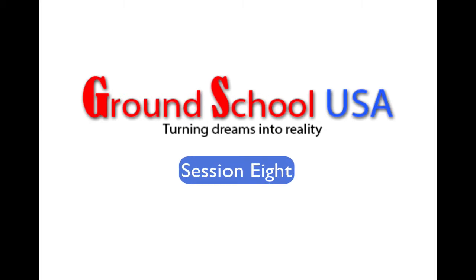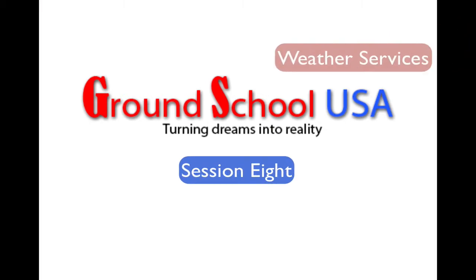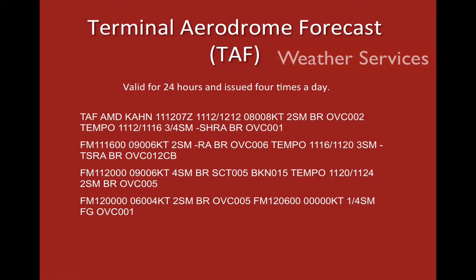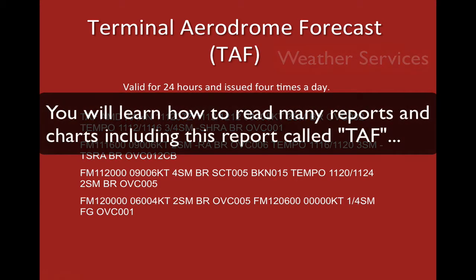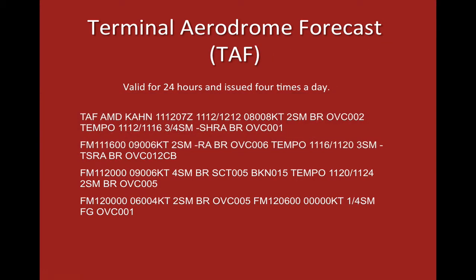These are forecasted conditions at select airports. Usually you can be sure any and all of the big ones — any of the Class B's or C's and many of the Class D's — have them, but not all do. If your departure or arrival airport does not have a TAF published, you can just go to the nearest airport that has a TAF and utilize that TAF as your forecast.